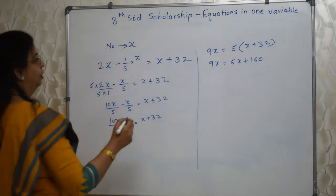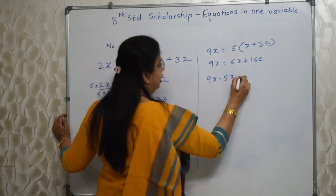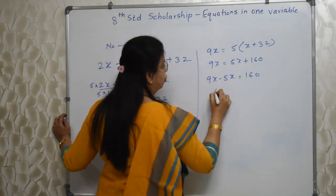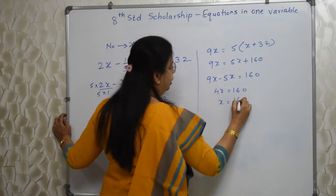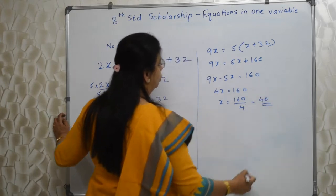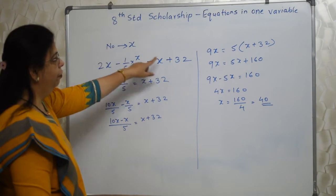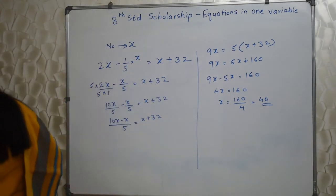I will write it here now. This 5 I will transfer to that side. This is 10x minus x is 9x. And this 5 I will take to that side multiplied by 5. So 9x is equal to 5x plus 160. This 5x we will shift to that side. 9x minus 5x is equal to 160. So 4x is equal to 160. So x is equal to 160 upon 4, that is 40. So original number which we had assumed as x, we have got the value for that. That is 40. So our answer is 40.